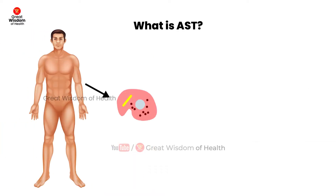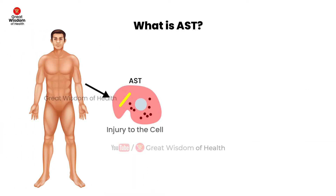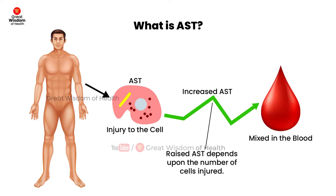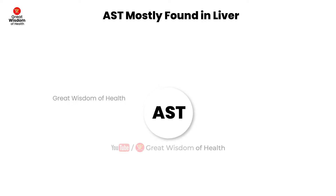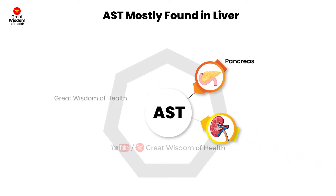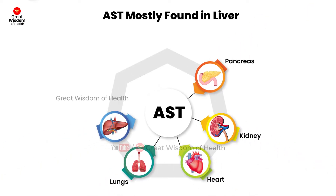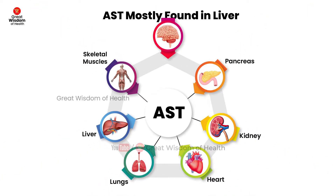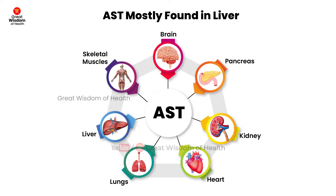What is AST? AST is also formerly known as serum glutamic oxaloacetic transaminase. AST stands for aspartate aminotransferase. AST is an enzyme that is found mostly in the liver, but it is also found in muscles and other organs in your body.